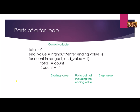Let's review the parts of our for loop. Our control variable is 'count'. Our starting value is the first number, our ending value is the second number, and our step value is the third number. Notice that 'count += 1' is commented out because you don't have to have an explicit increment in your for loop — you don't want to include it at all.